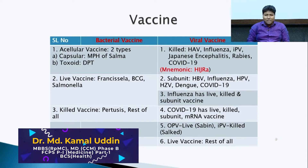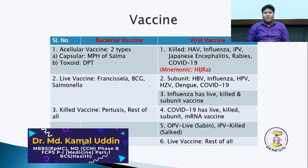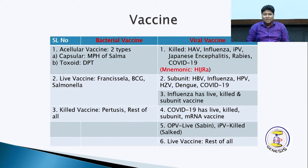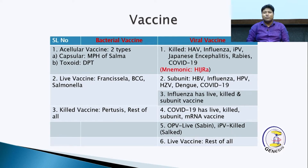This vaccine means that bacteria can have a living cell or killed cell. Cellular vaccine is two kinds: capsular and toxoid.